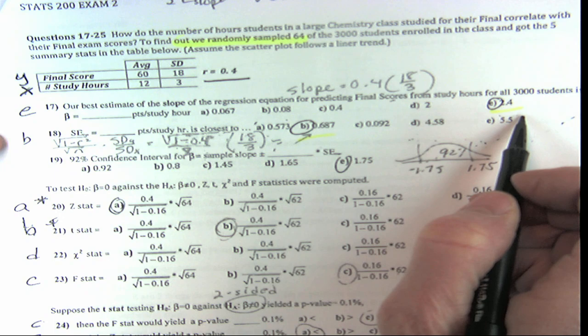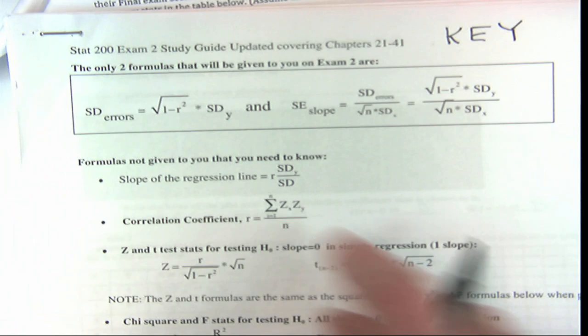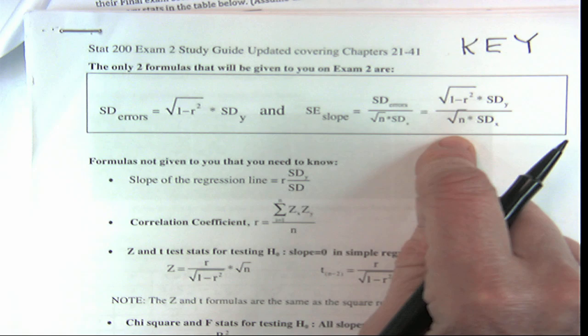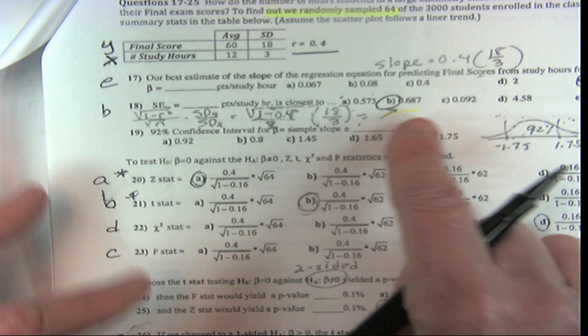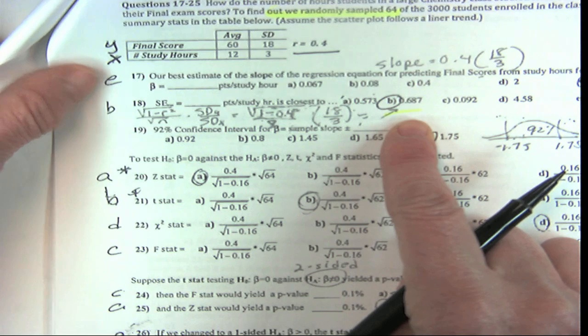So now we know the slope is 2.4. The standard error for the slope is a little complicated—that's another one you're going to get, so you don't have to calculate it. Now, right away, if I asked you to do a Z-test to see if this slope is significant—remember what we're doing—we have this population of all 3,000 students. The null is that in the population, how much you study and what score you get has correlation zero.